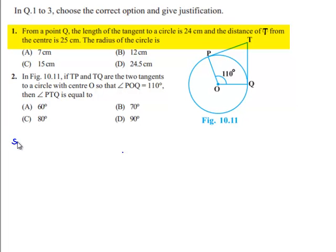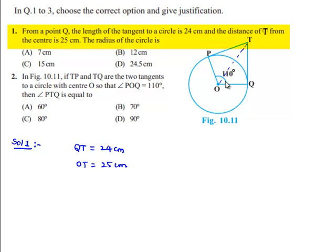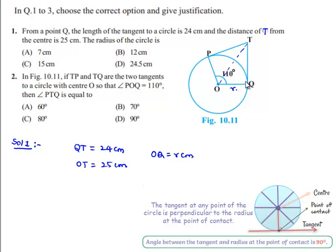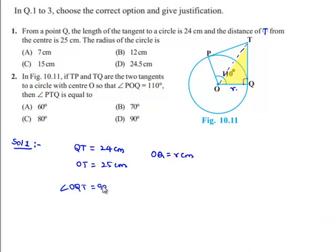Moving on to the solution for the first one: the length of tangent from point Q is given as QT = 24 cm, and the distance from center is OT = 25 cm. We need to find the radius OQ. We know that a tangent at a point to a circle is always perpendicular to the line joining the center and that point, therefore angle OQT = 90°, making triangle OQT a right triangle.